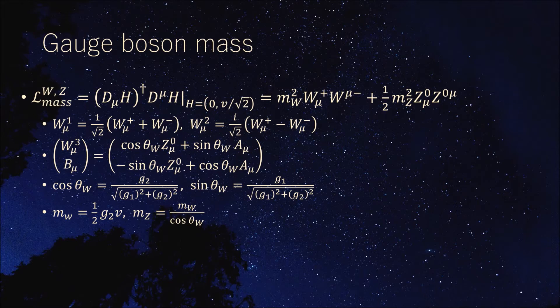It is convenient to redefine the gauge fields W and B. Then, the mass term of the Lagrangian density is diagonalized. W plus minus is called a W boson, and Z0 is called a Z boson.